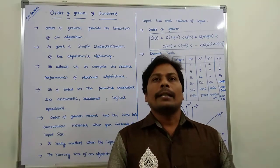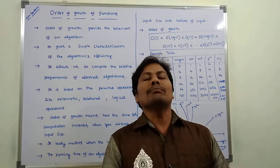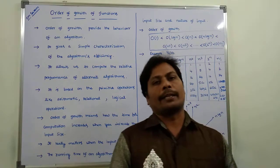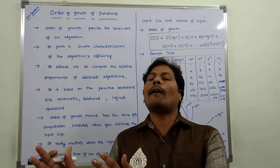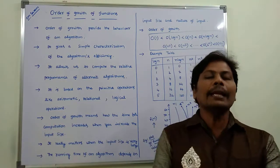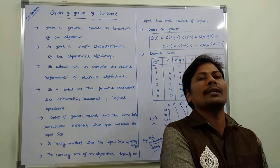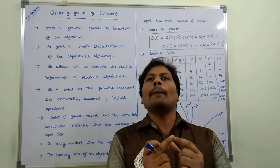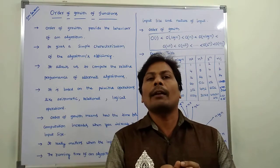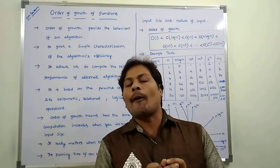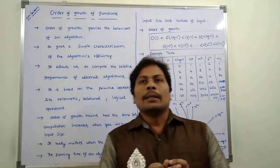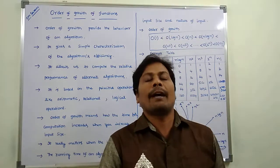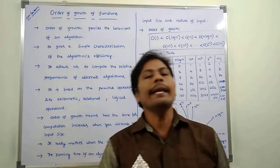The computational time is directly proportional to the input size of the algorithm. If the input size of the algorithm increases, then the computational time of the algorithm also increases. There is a direct proportionality between computation time and input size. Order of growth really matters when the input size is very, very large.